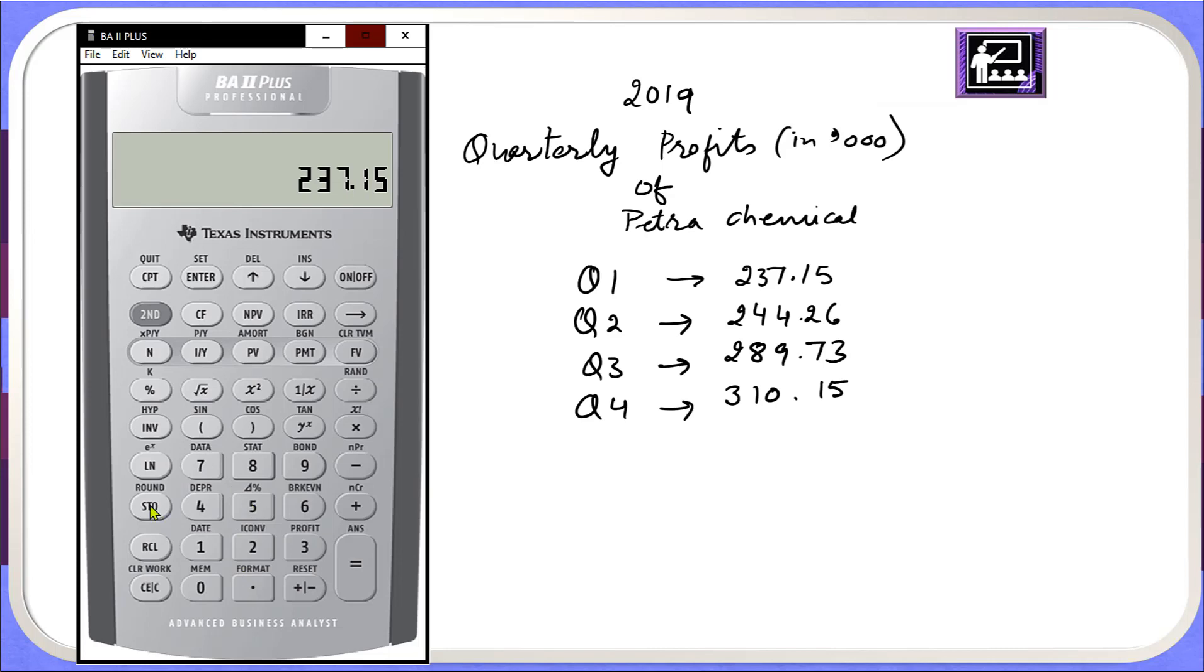And first memory location is actually the zeroth location and I will click STO. But make sure first we have to click STO and I will click zero, so this number has been entered to the first memory location which is actually M0.